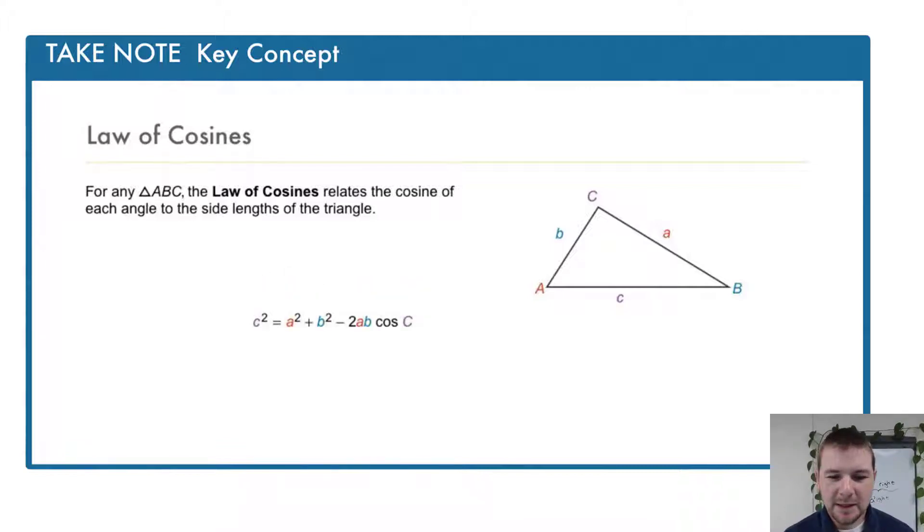And alternately, c squared equals a squared plus b squared minus 2ab times the cosine of C.